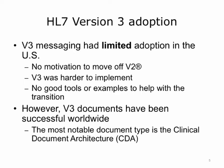HL7 version 3 messaging was somewhat successful outside the United States. However, it had limited adoption in the United States. The first reason is that version 2 messaging had already achieved widespread adoption. While every V2 implementation had variances and associated implementation costs, the industry did not feel a strong enough need to move past V2. Putting in a brand new version was expensive and hard. All the vendors would have to adapt, and they were very slow to adapt to version 3 because it was harder to implement. There was not a smooth conversion between version 2 and version 3.